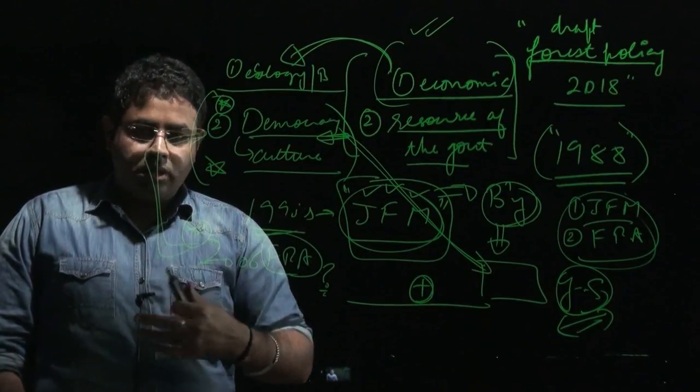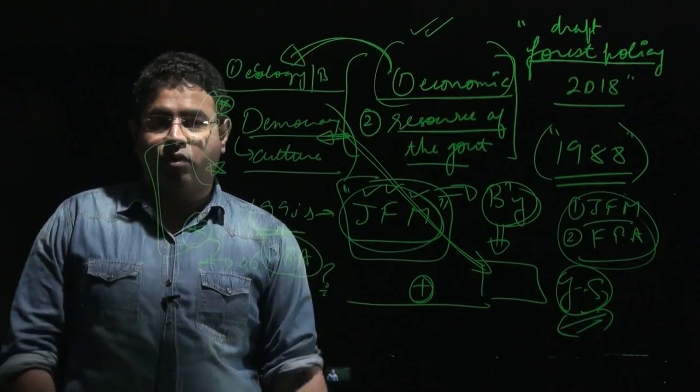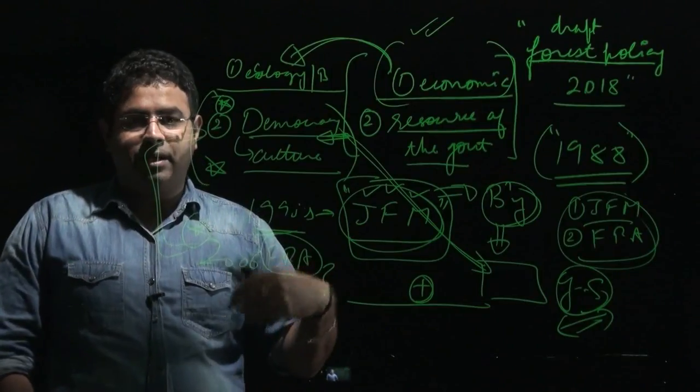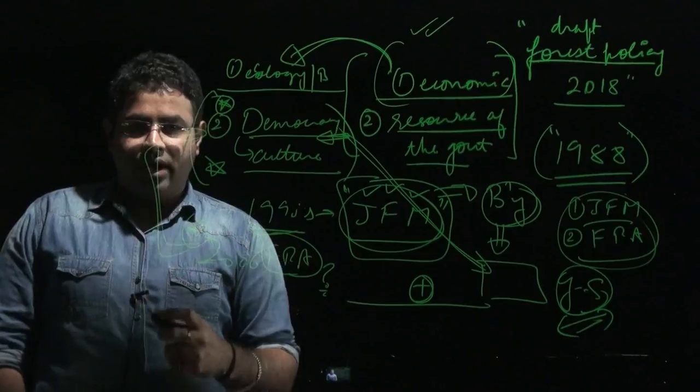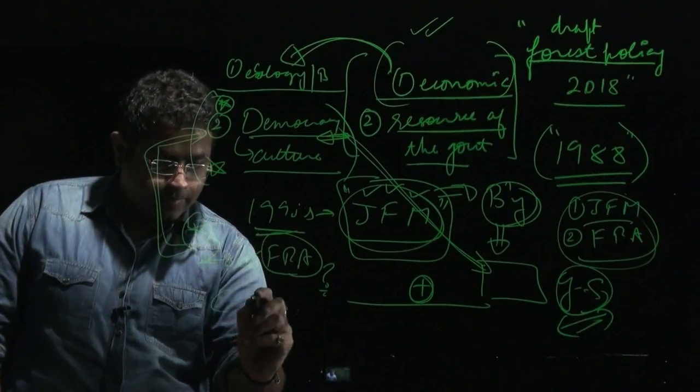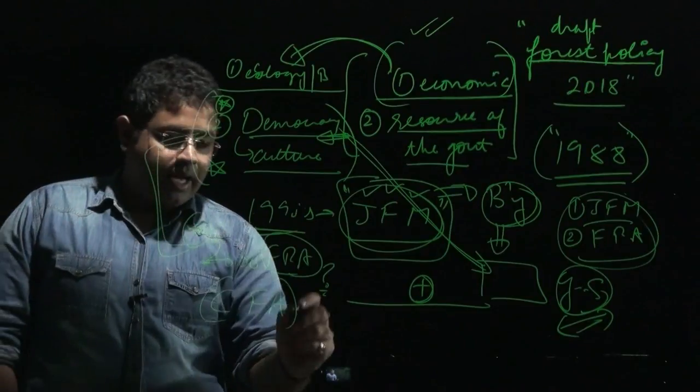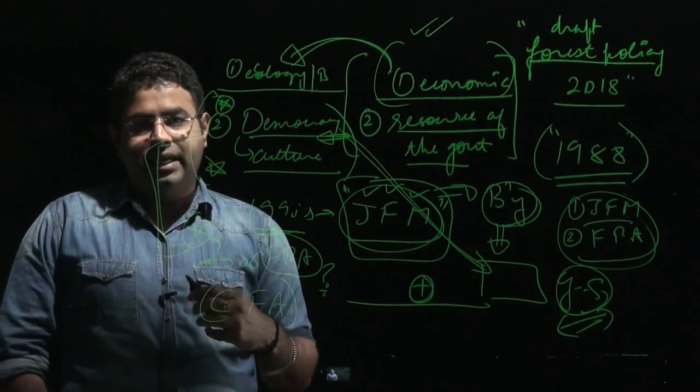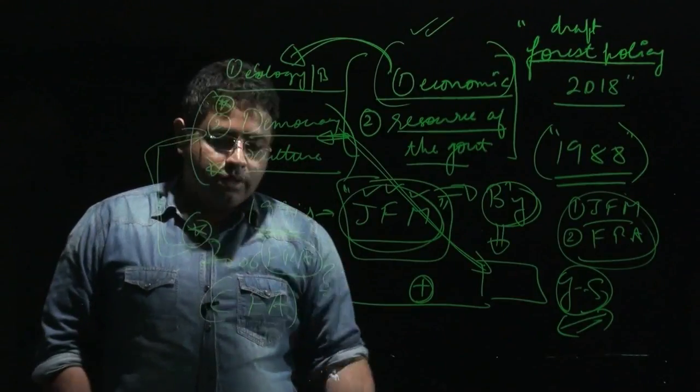The corporate class was looking at how to extract maximum resources from the forest, and they exerted pressure on the government. The government came out with a new law - the Compensatory Forest Act. This act basically takes away the power that was given to the gram sabha.